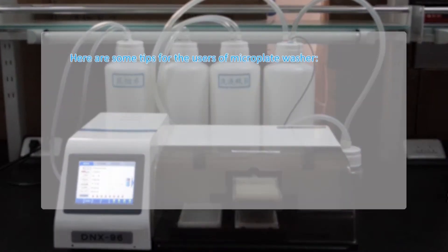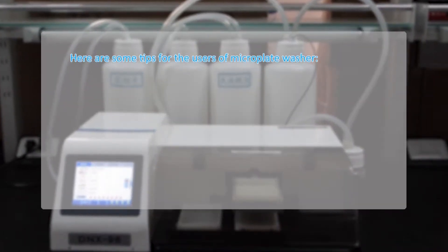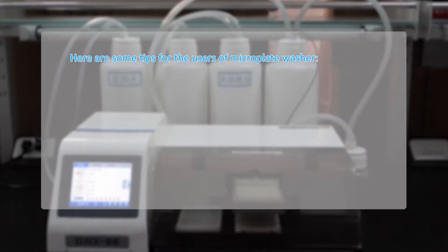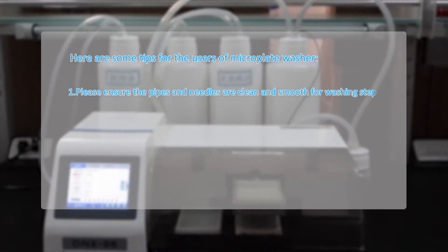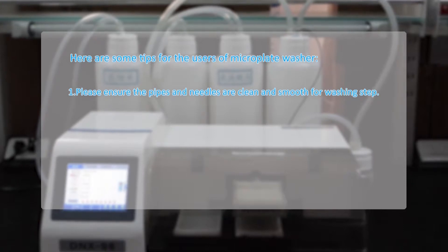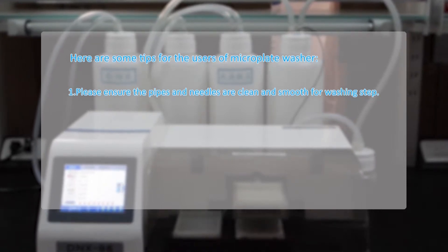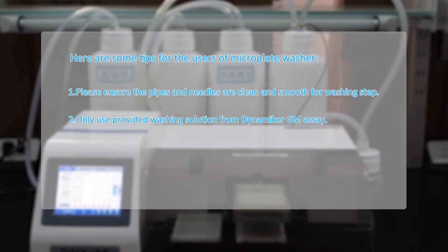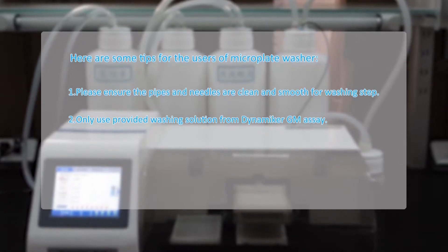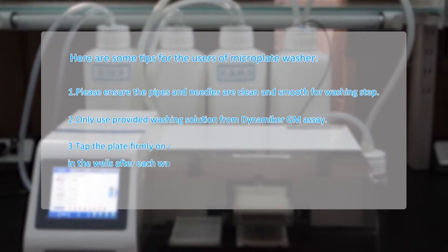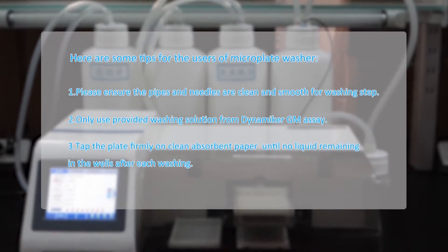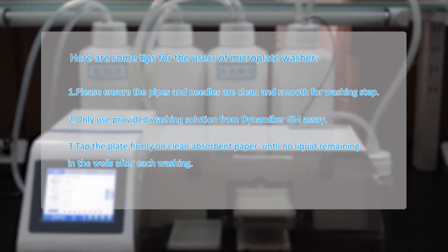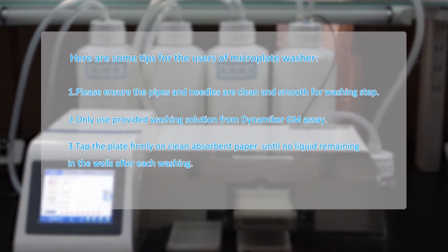Here are some tips for the users of microplate washer. First, please ensure that the pipes and needles are clean and smooth for washing step. Second, only use provided washing solution from Dynamica GM assay. Third, tap the plate firmly on clean absorbent paper until no liquid remaining in the wells after each washing.